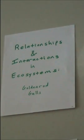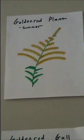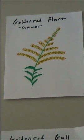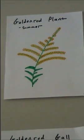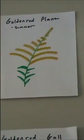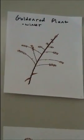Most of us are familiar with the goldenrod plant. They are, as the name suggests, a mass of small golden flowers towards the top of a green stalky plant, and are most commonly seen in open fields. In the late fall and winter months, the flowers, leaves, and stalk all turn brown.